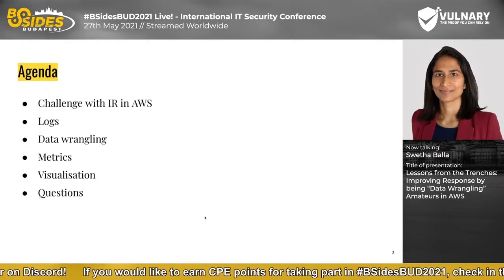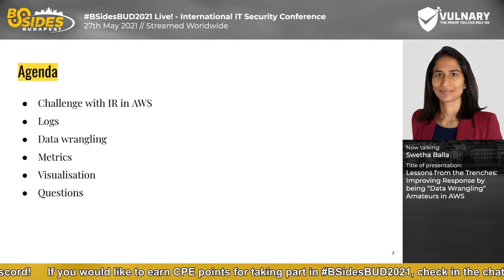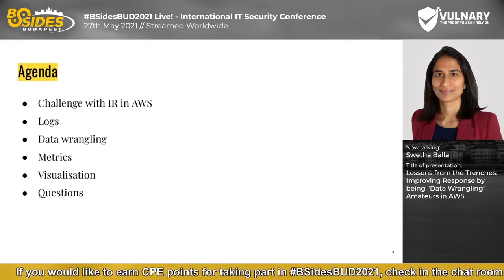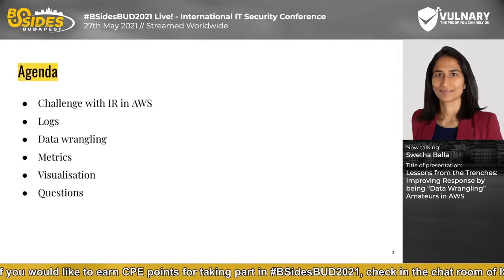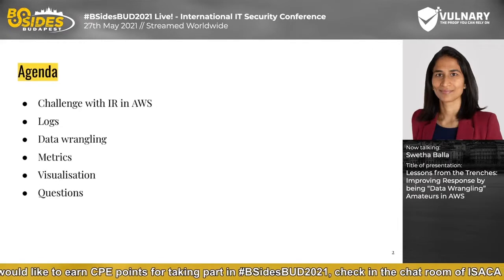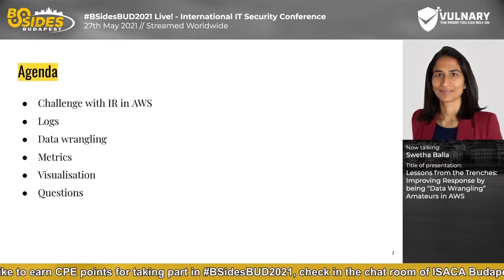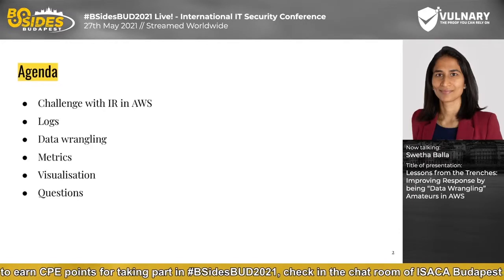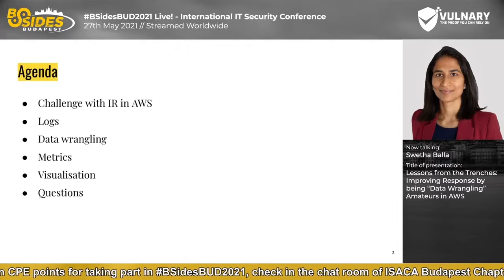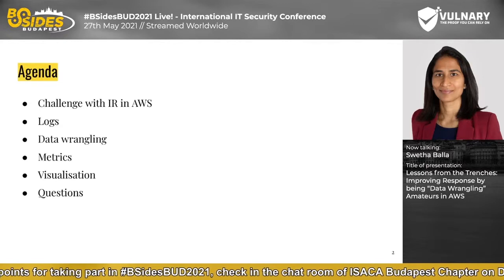A quick walkthrough through the agenda. Initially, I'm going to focus on some of the challenges associated with doing incident response in AWS, but not focused on why it's different from traditional incident response or how to look at logs. That's not the focus of this talk. Instead, I'm going to highlight some of the challenges in terms of once you have all the logs you need to conduct incident response, and how to use native AWS services to wrangle some of this data.